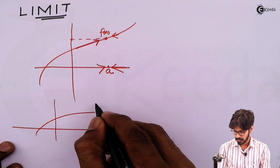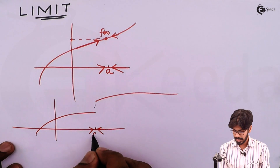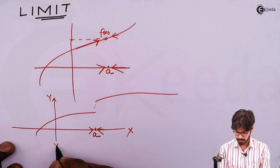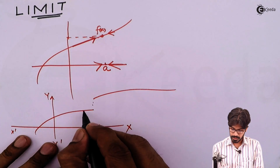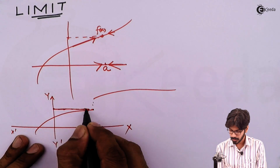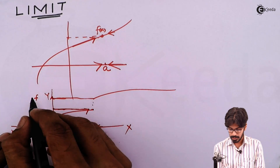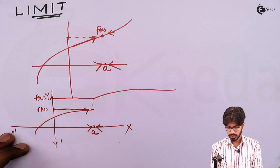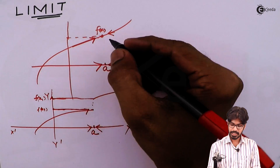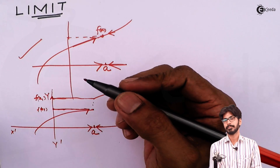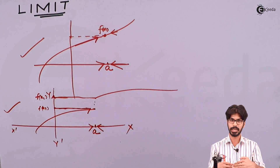Let us consider this function. If X approaches — that is, X tends to a — when we approach towards a, f of X from the left side will approach one value, and from the right side f of X will approach another value. Let us say f of x1 and f of x2. In both cases, f of X does not approach the same value when X approaches a certain value a.